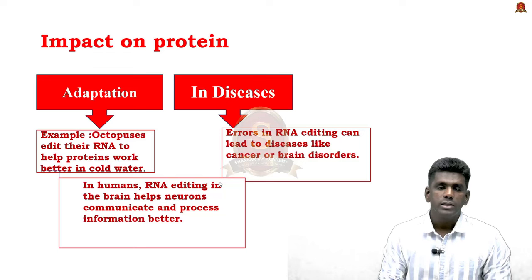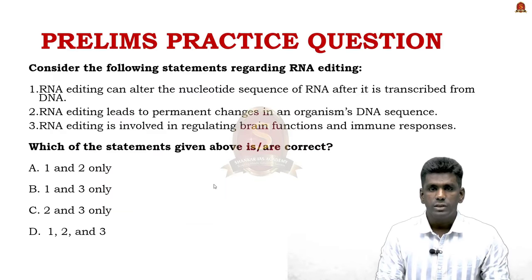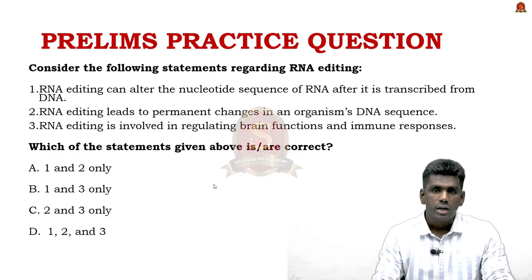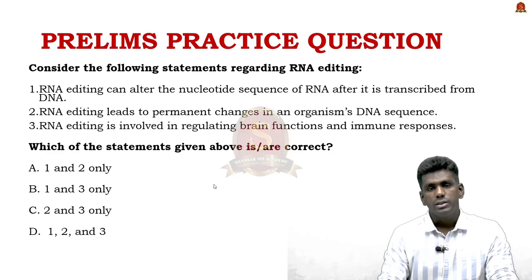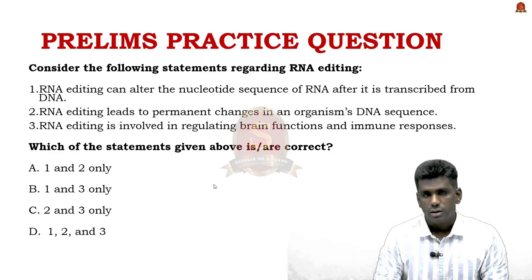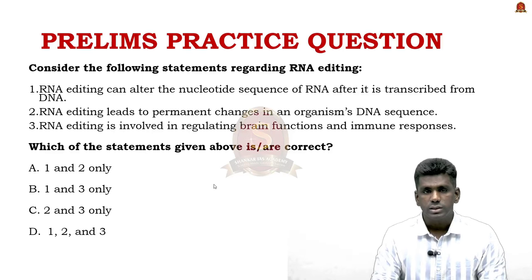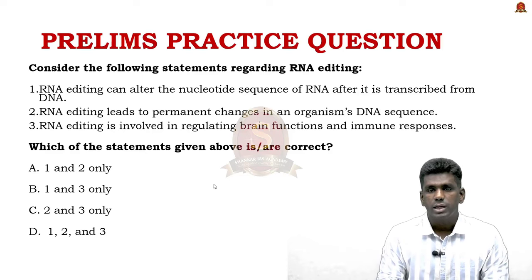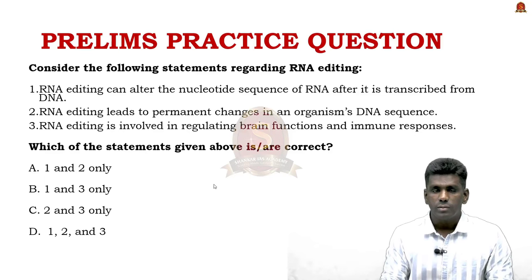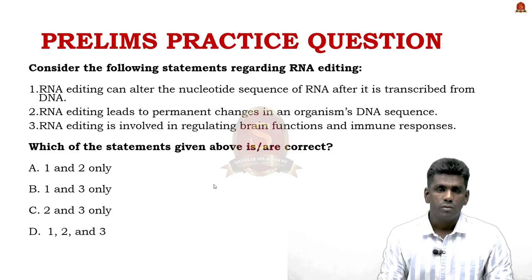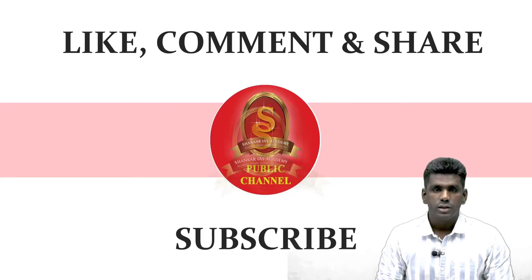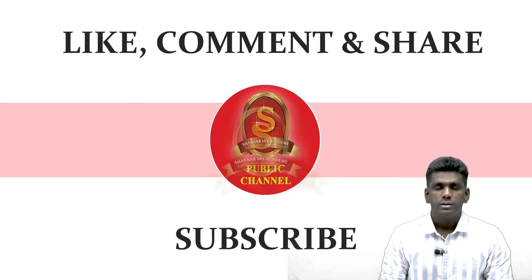MCQ on RNA editing: Statement 1 — RNA editing can alter the nucleotide sequence of RNA after it is transcribed from DNA — is correct. Statement 2 — RNA editing leads to permanent changes in an organism's DNA sequence — is incorrect, as RNA editing only leads to temporary, reversible changes. Statement 3 — RNA editing is involved in regulating brain function and immune response — is correct. The correct answer is Option B, one and three only. That concludes today's discussion; please share the video and subscribe to Shankarayas Academy's YouTube channel.